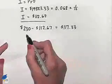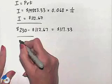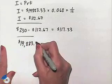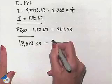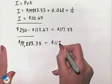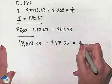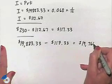So we're going to take $19,883.33, subtract from it the principal of $117.33 to come up with our balance of $19,766, which will go into our last column.